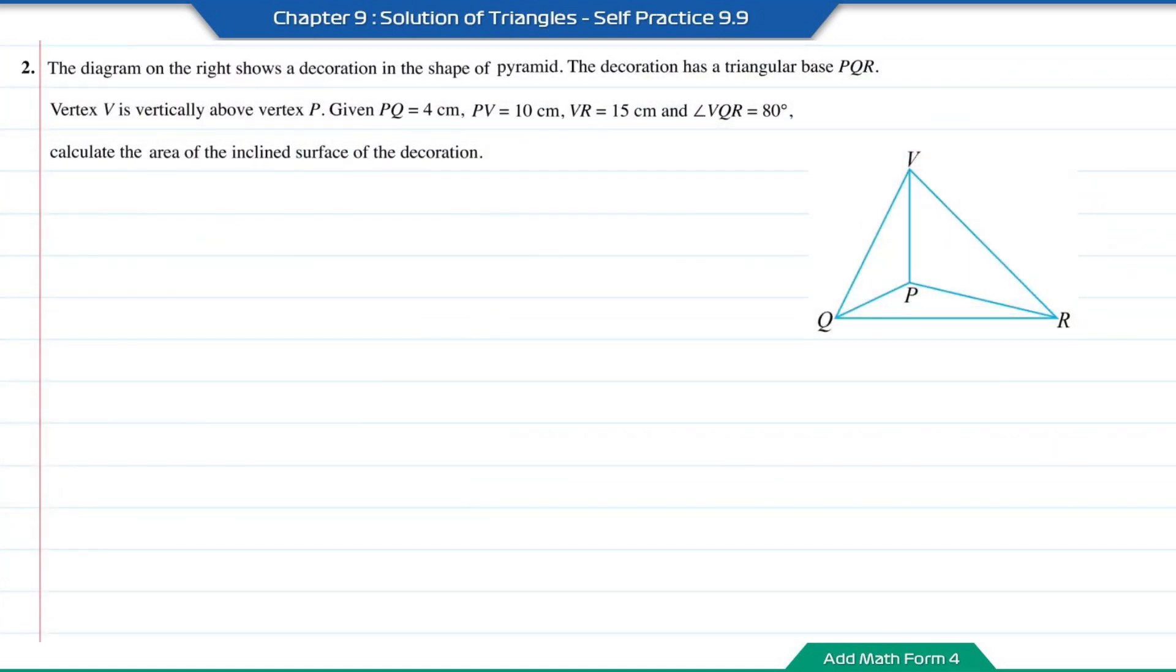The diagram on the right shows a decoration in the shape of a pyramid. The decoration has a triangular base PQR. Vertex V is vertically above vertex P. Given PQ equals 4 cm, PV equals 10 cm, VR equals 15 cm, and angle VQR equals 80 degrees. Calculate the area of the inclined surface of the decoration.